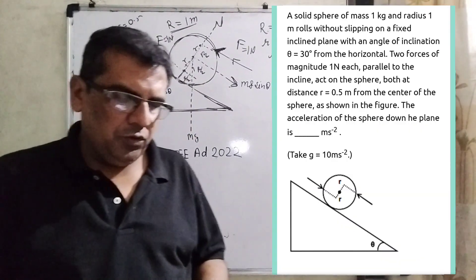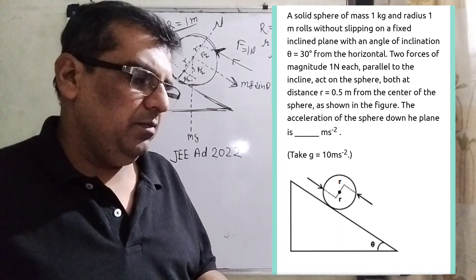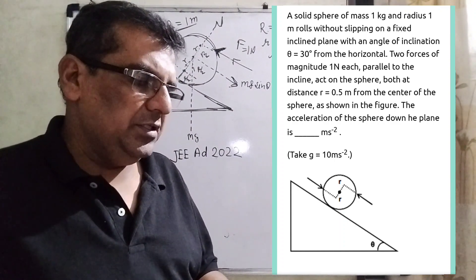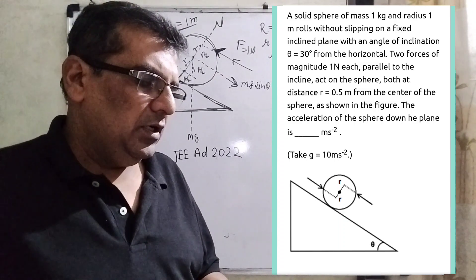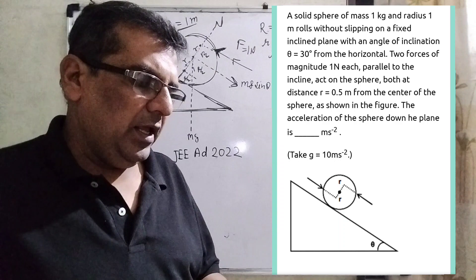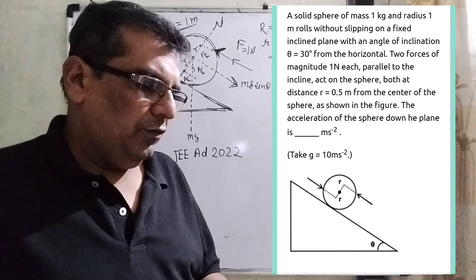Let's move on to what the question says. A solid sphere of mass 1 kilogram and radius 1 meter rolls without slipping on a fixed inclined plane with an angle of inclination theta equal to 30 degrees from the horizontal.